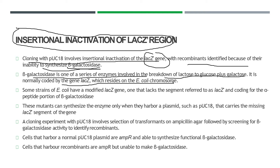Some strains of E. coli have a modified lacZ gene — one that lacks the segment referred to as lacZΔM15, coding for the alpha peptide portion of beta-galactosidase. Beta-galactosidase is synthesized via the alpha peptide portion, through which it involves the breakdown of sugars from lactose to glucose plus galactose.